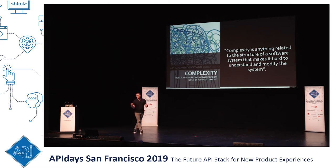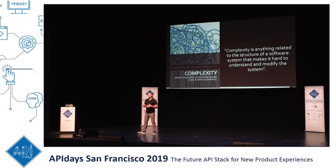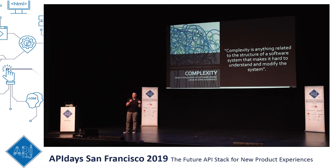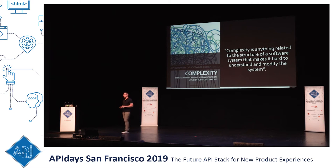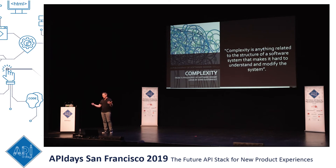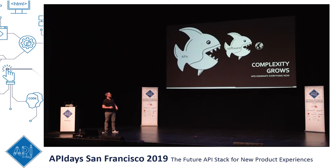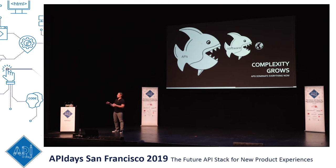Probably all of us are currently trying to figure out how to do business agility — greater, faster, better, more — probably in the midst of some kind of digital transformation effort, and the degree to which we can achieve those things is really based on the amount of complexity that we have in our systems. And everybody here has probably seen the complexity inherent in the modern software stack, but the fact is every company is now dealing with this kind of complexity whether they want to or not.